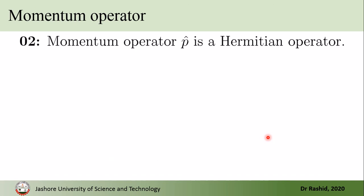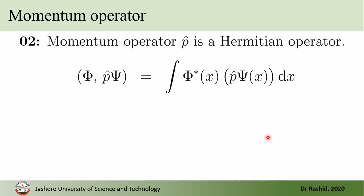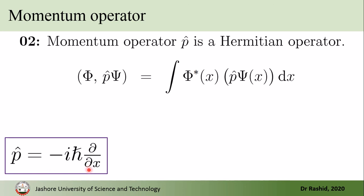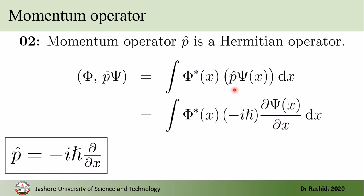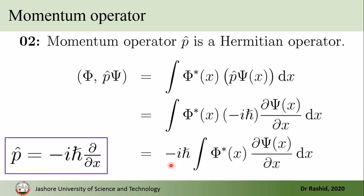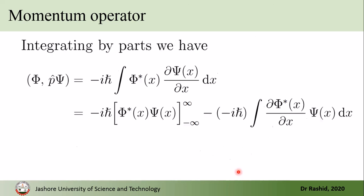Now we want to show that the momentum operator is also a Hermitian operator. We do the same to show this, but we know that p-hat equals minus i h-bar times d/dx. So we use the definition here and take minus i h-bar out, giving us this expression. Now we integrate by parts to evaluate these integrals, and we arrive at this line.